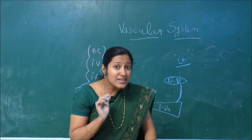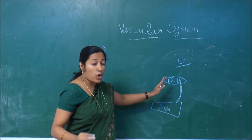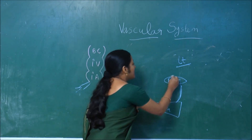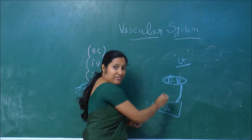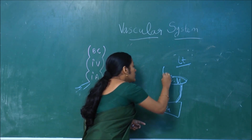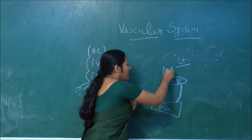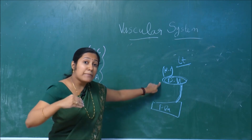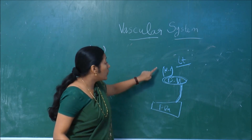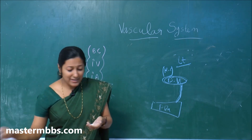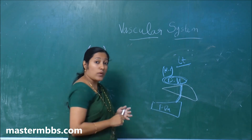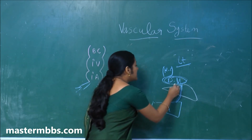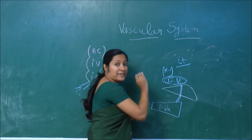The ductus venosus connects two veins — it connects the left umbilical vein to the hepatocardiac channel. The majority of blood from the left umbilical vein goes directly to the hepatocardiac channel through the ductus venosus. This structure helps in bypassing the liver, directly connecting the umbilical vein with the hepatocardiac channel instead of allowing blood to stagnate in the liver.